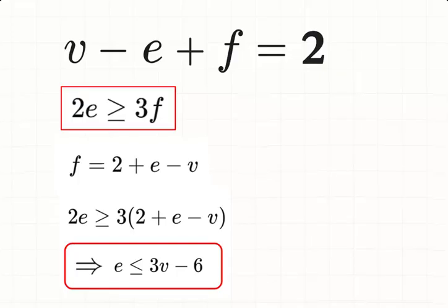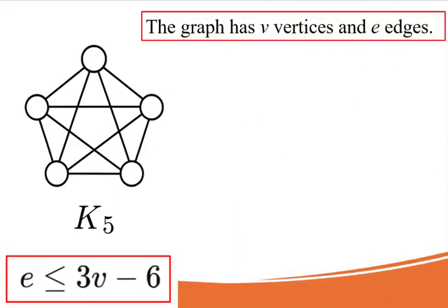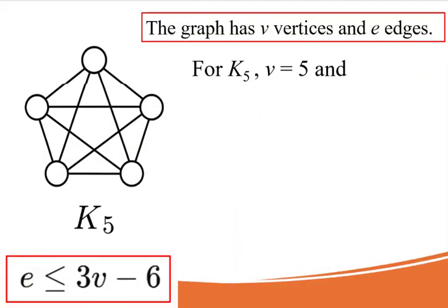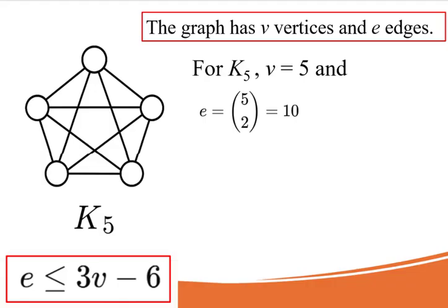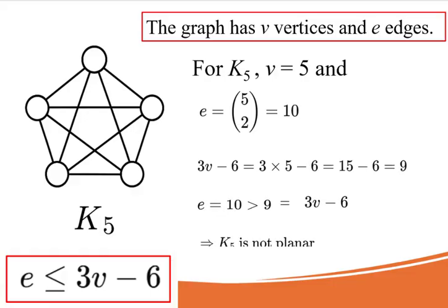Let's test the inequality on K5. K5 has 5 vertices, 10 edges. Calculate 3V minus 6. 3 times 5 is 15. Minus 6 gives 9. But K5 has 10 edges, which is more than allowed. So it violates the inequality. That means K5 is not planar.